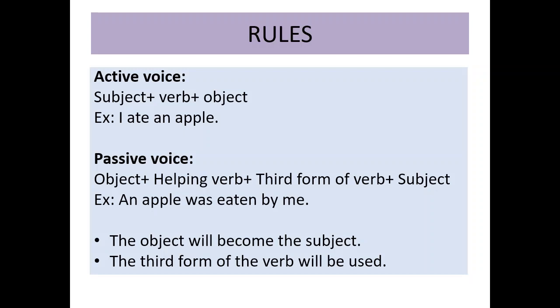An apple — which was the object — becomes the subject. After that, in passive voice, a helping verb is added. Here, 'was' is used because the tense is past and the subject 'an apple' is singular. The verb 'ate' is the past form of 'eat,' and in passive voice we use the third form of the verb. So: 'An apple was eaten by me.' The third form of 'eat' is 'eaten.'